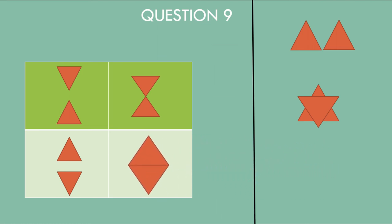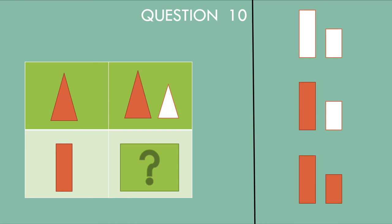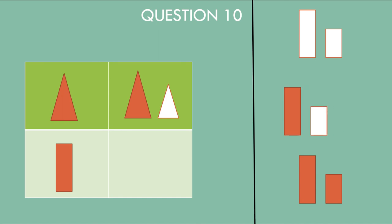The next question is also simple. One triangle, then a triangle — that is also a small white-colored triangle. Now there is a rectangle. What is the option? We will replicate it. First, it is the same size rectangle with the same color, and then it is a white-colored rectangle.